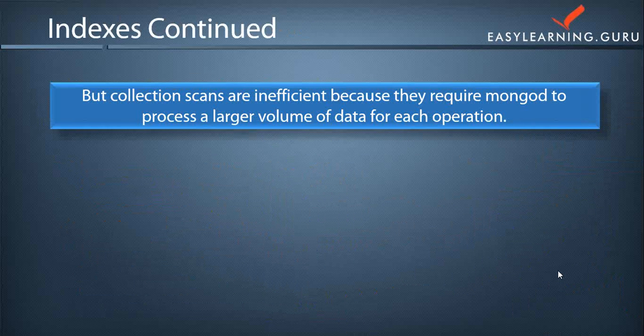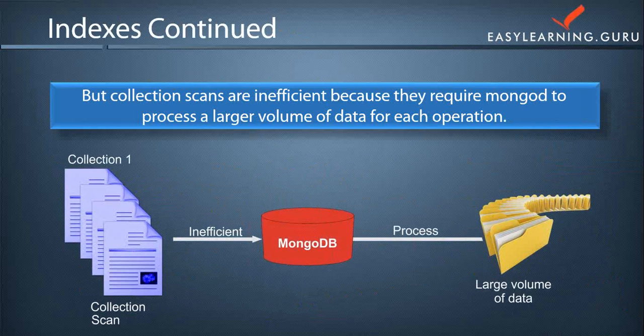Collection scans are inefficient because they require MongoDB to process a larger volume of data for each operation, or for every query.